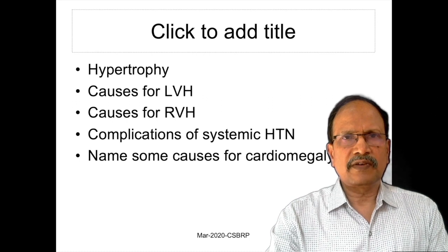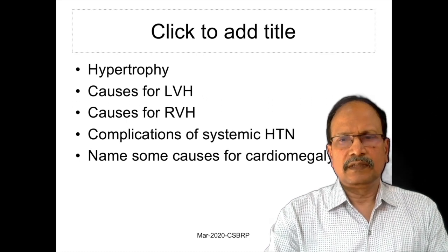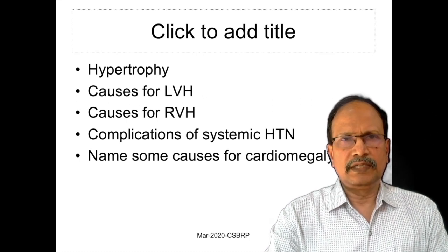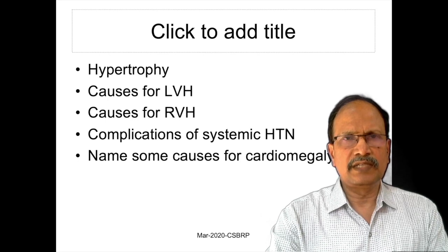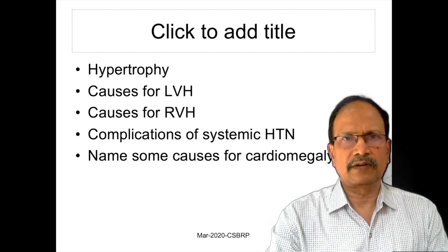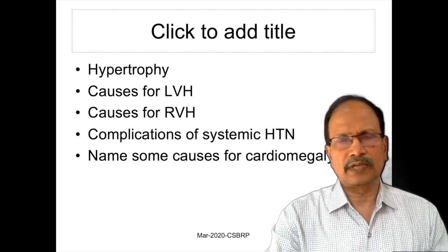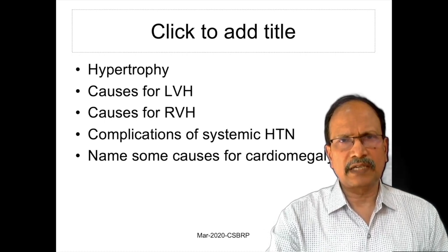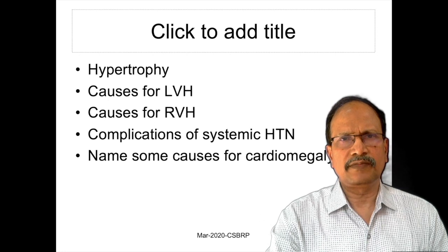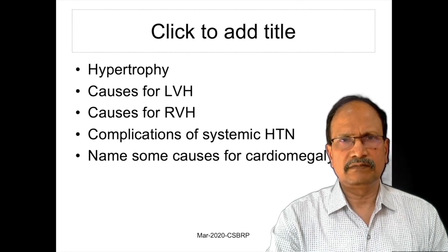Causes for left ventricular hypertrophy: whatever causes increased workload on the left ventricle results in left ventricular hypertrophy. It may be due to aortic stenosis, coarctation of the aorta, or regurgitation involving the mitral valve.